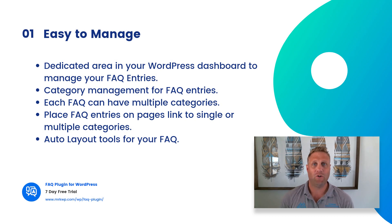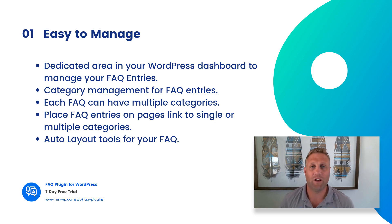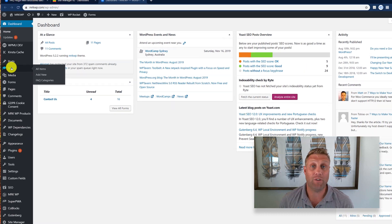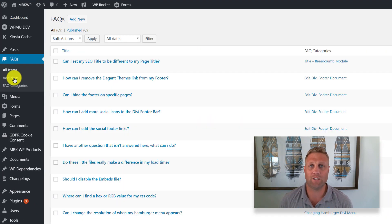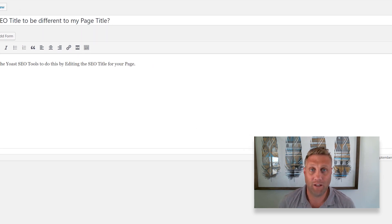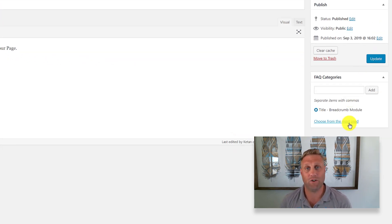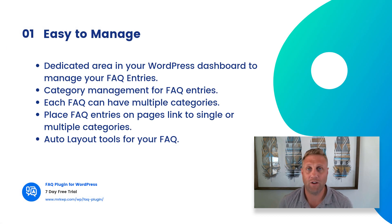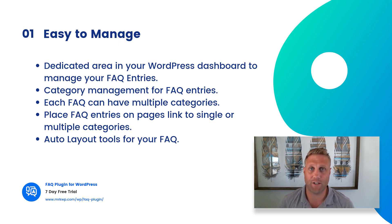Our easy to manage FAQ items are dealt with by using a custom area in your WordPress dashboard. In this area, you can manage your FAQ entries. You can also classify them in categories and have multiple categories per FAQ. Then you can place those FAQ items on any page around your website using either the Divi Builder, the Gutenberg blocks, or shortcodes if you're still using the classic editor.